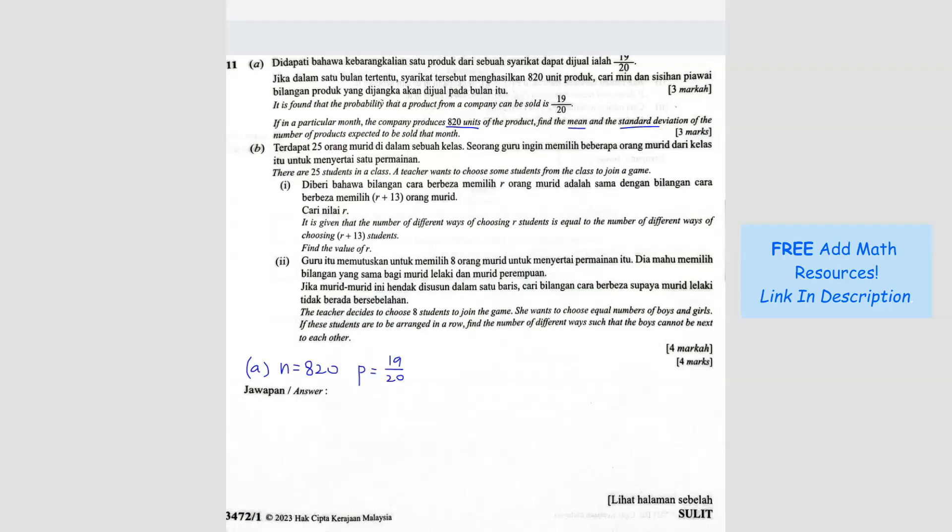So what are we looking for? We're looking for the mean and standard deviation. So the mean is, we know the formula. Mean is NP, right? And then the standard deviation is NPQ and then you have to square root. So NP means 820 times 19 over 20. So your answer is 779.